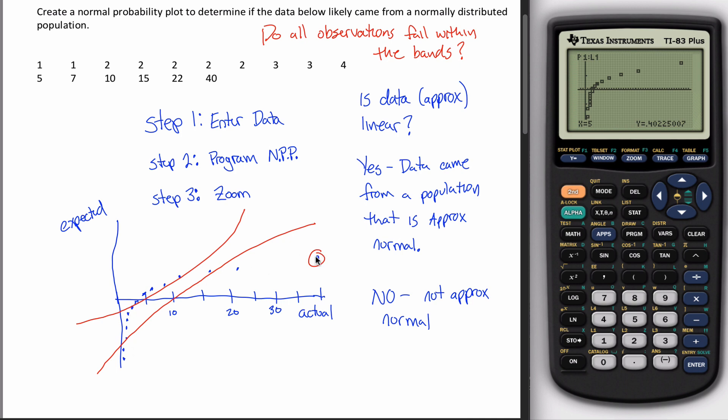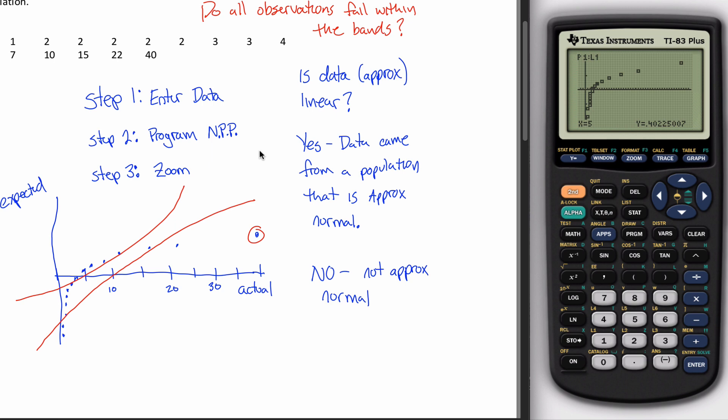So what can happen in our class is I can ask you to make the normal probability plot, and then you answer this question subjectively, do the dots look like they're in a straight line or not? And I, because I'm a nice teacher, am either going to make them super duper linear or super duper not linear. But in a more realistic context, what would probably happen is you'd use software that's a little bit more powerful that would be able to calculate these bands for you.